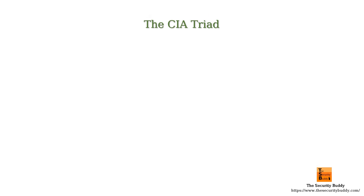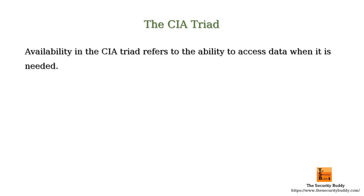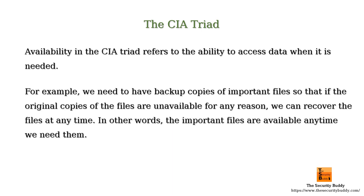Availability in the CIA triad refers to the ability to access data when it is needed. For example, we need to have backup copies of important files so that if the original copies are unavailable for any reason, we can recover the files at any time — meaning the important files are available whenever we need them.